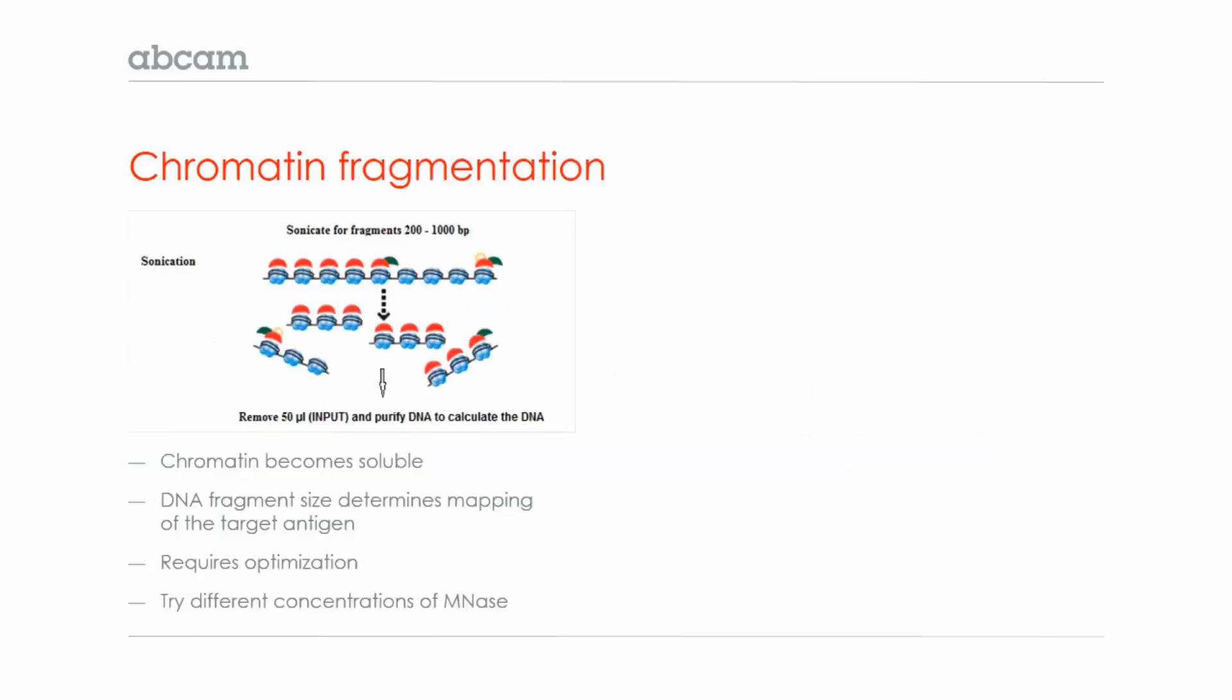Next, whether you're doing cross-linking ChIP or native ChIP, you need to fragment the DNA into smaller sizes. DNA fragmentation is important because it makes the chromatin soluble, and the DNA fragment size determines the mapping of the target antigen.